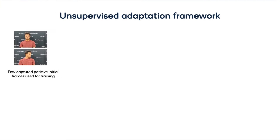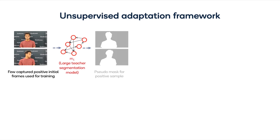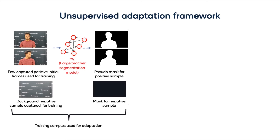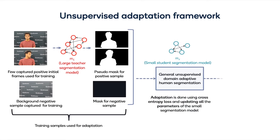For adapting the small and efficient segmentation model to the user's video stream, we use a much larger teacher model to generate pseudo-masks for the user and background in the initial frames. The pseudo-labeled frames, along with the background images, are used to fine-tune the efficient model. Thus, the efficient model achieves similar performance to the large model by resolving domain shift problems.